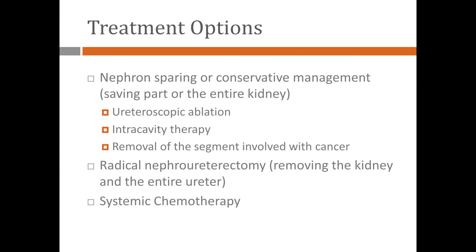In the next few minutes, I'm going to try to give an overview of the treatment options for this rare and sometimes difficult disease. In general, we can split the treatment for upper tract urothelial carcinomas into three different categories.